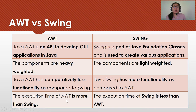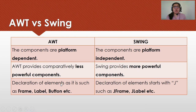In terms of execution time, AWT is more than SWING. In terms of the components, for AWT these are platform-dependent, while for SWING they are platform-independent.